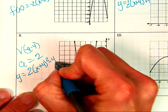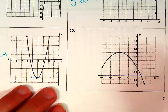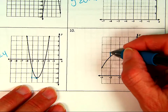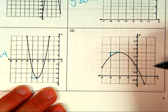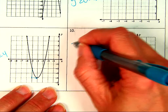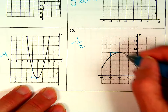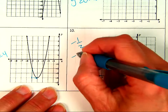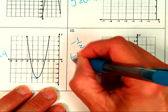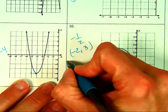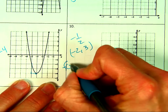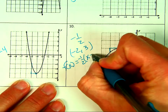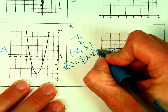Last one: over 1, down one half — A is negative one half. Vertex is (−2, 3). So f(x) = −½(x + 2)² + 3.